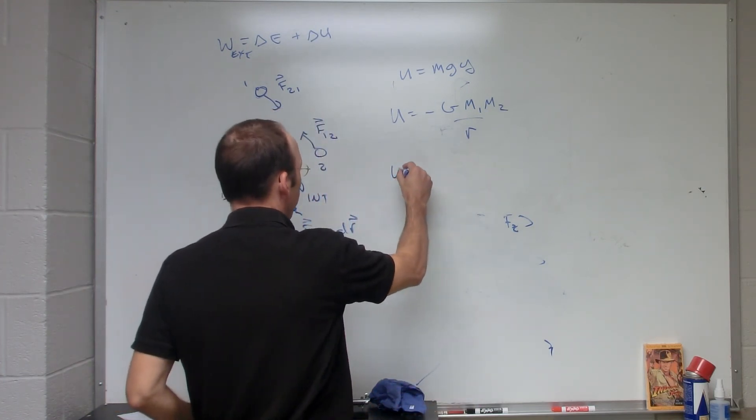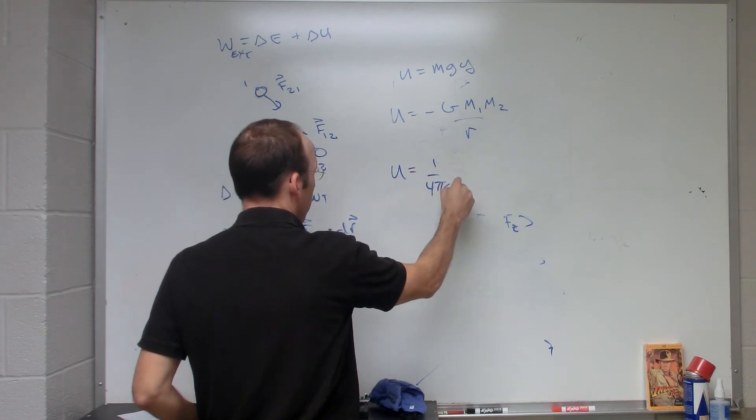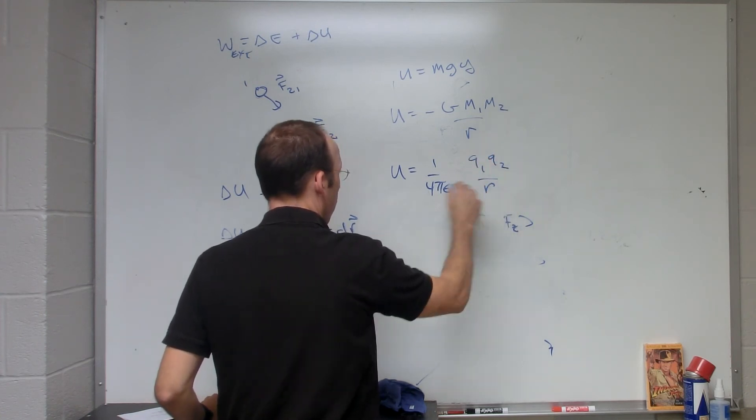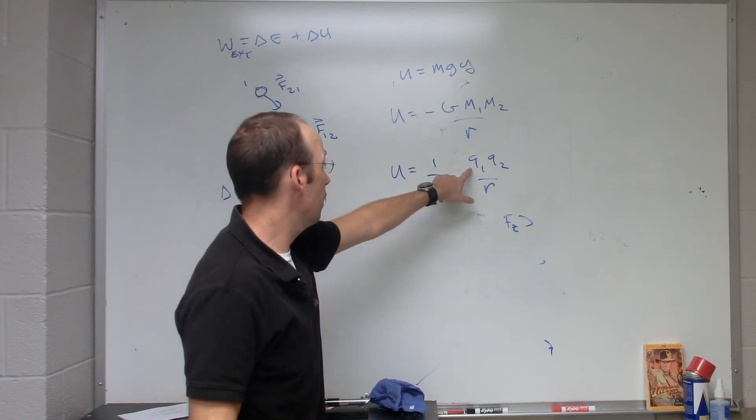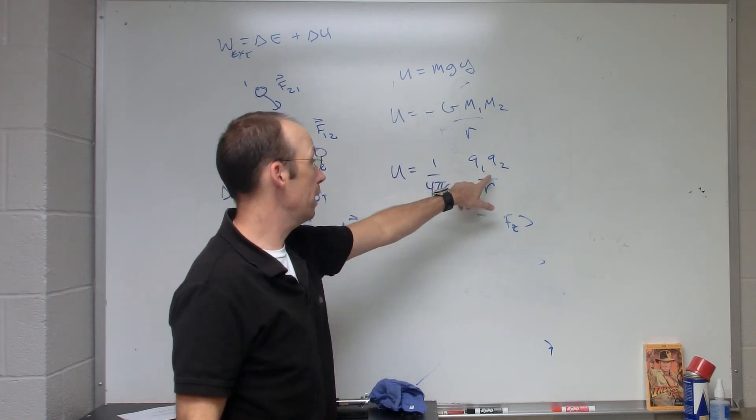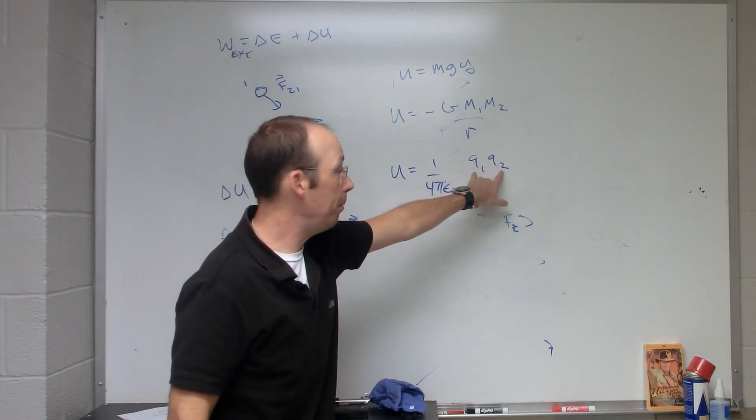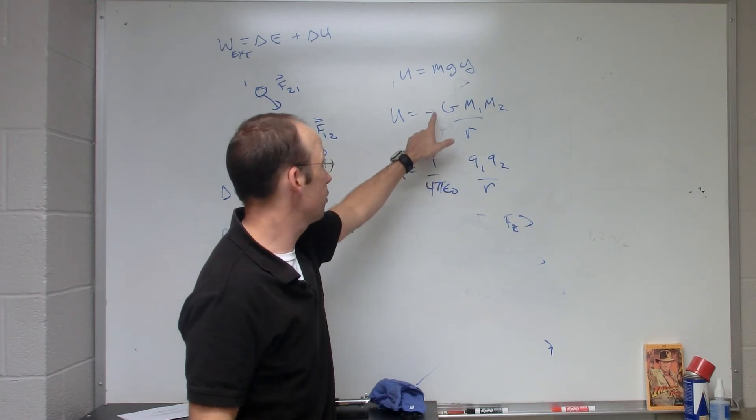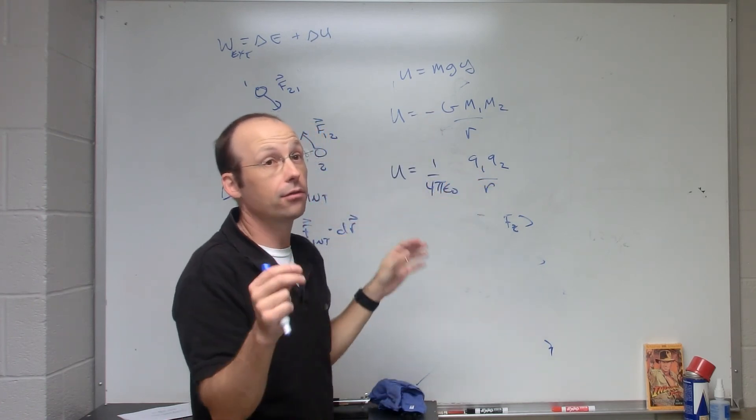And then we also have electric potential energy: one over four pi epsilon naught, q1 q2 over r. This one's positive and that one's negative. The reason is that for electric potential we can have attractive or repulsive forces. If these are opposite in sign then you get a negative and it looks just like the gravitational potential energy, but they could be the same sign, repelling, so it looks a little bit different.